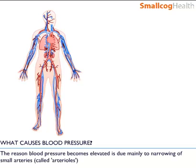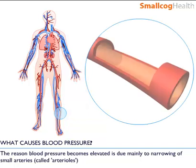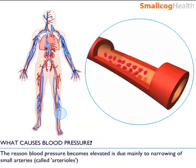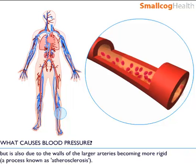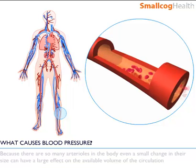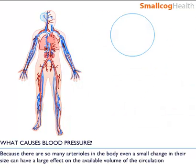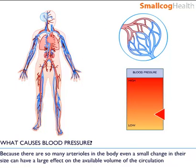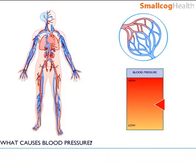What causes blood pressure? The reason blood pressure becomes elevated is due mainly to narrowing of small arteries called arterioles, but also due to the walls of the larger arteries becoming more rigid, a process known as atherosclerosis. Because there are so many arterioles in the body, even a small change in their size can have a large effect on the available volume of the circulation, and this leads to an increase in the pressure.